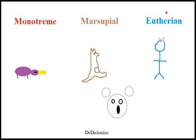Eutherians, like us, like humans, we have an internal placenta. And this embryo develops inside of the woman's uterus to essentially completion or until delivery. We're seen as obviously the most evolved of these species.